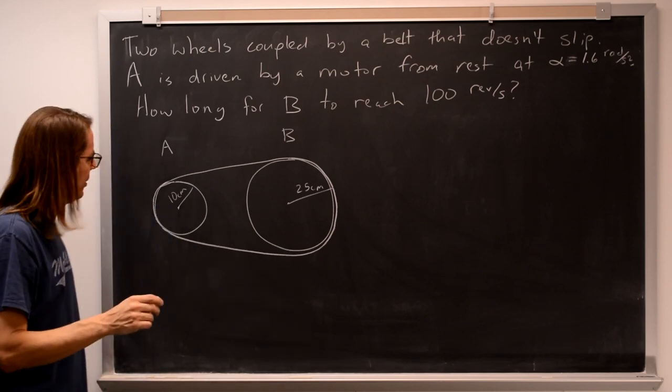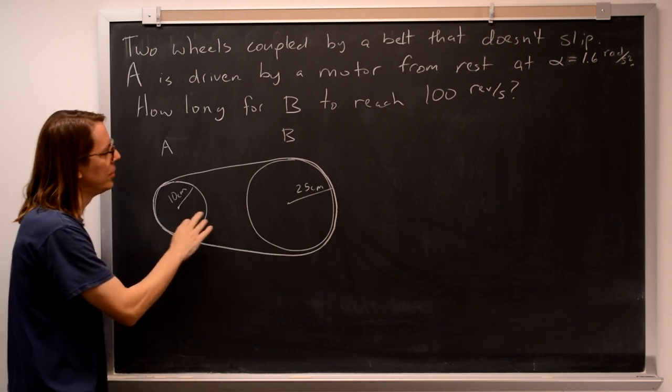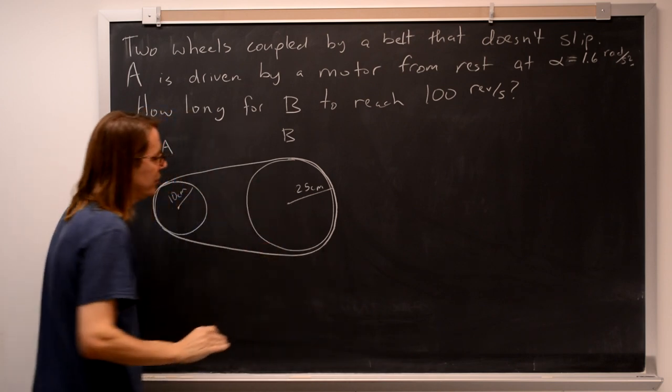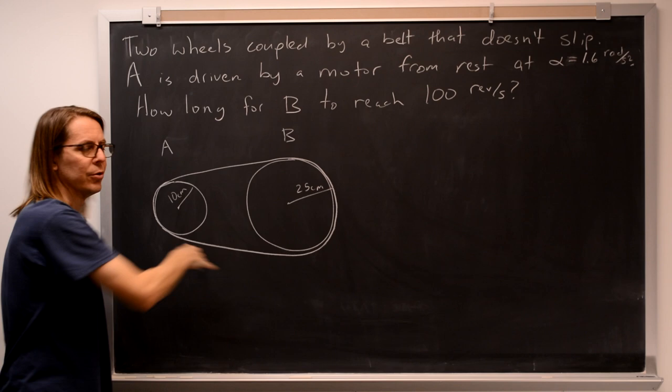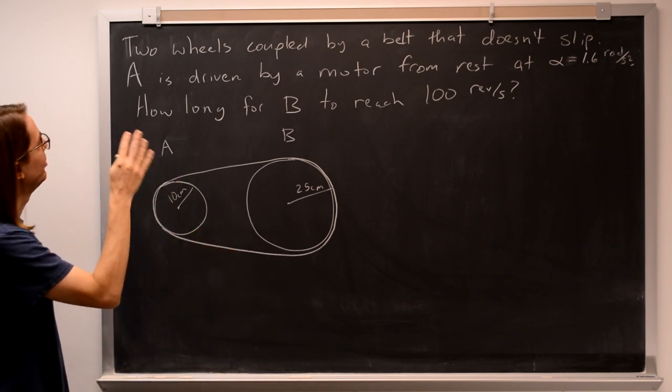Here are two wheels and a belt. So wheel A is smaller, has a radius of 10 centimeters, wheel B larger, a radius of 25, and a belt goes around them so that when you rotate one, you rotate the other. Okay, so they're coupled by one.